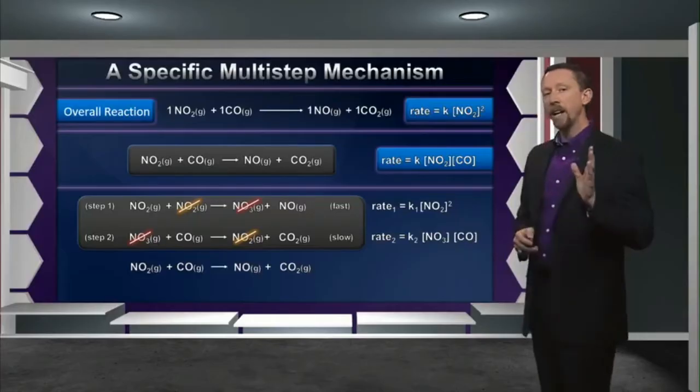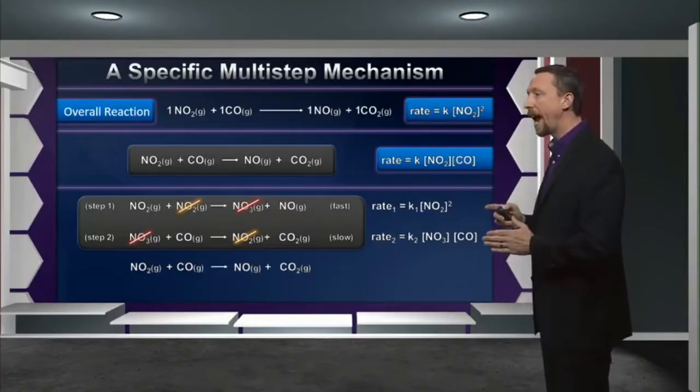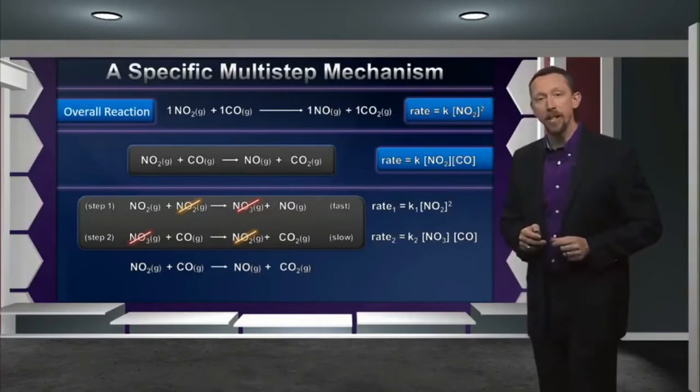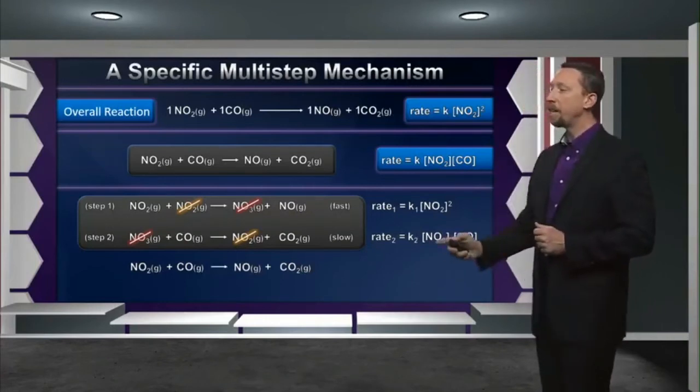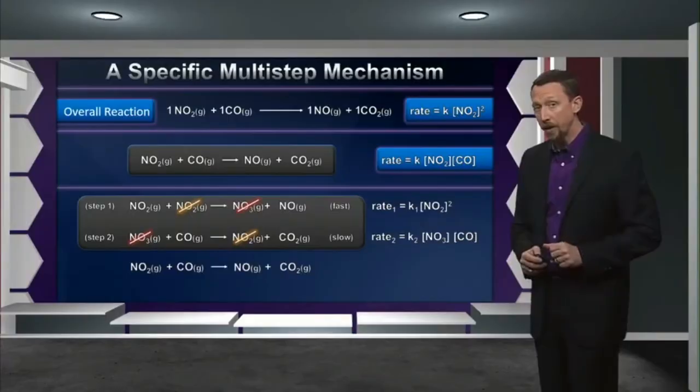Now, when I think about the overall rate law for this mechanism, I have to consider both of my elementary steps because I've designated my second reaction as the slow reaction. And when I do this, what I find out is that the overall rate law has to be K times NO2 squared times CO. So by including that second step, I've included one of the reagents that I know shouldn't have an effect on rate. In other words, this mechanism as written cannot possibly be accurate because its rate law is inconsistent with my observed rate law.